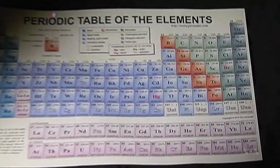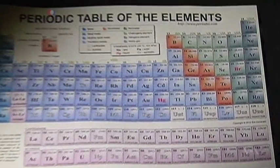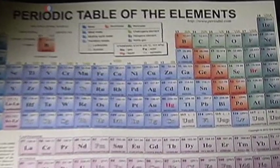The first 98 elements of the periodic table occur naturally, although some only in traces.